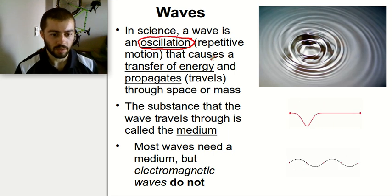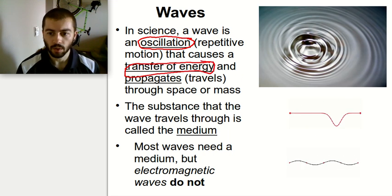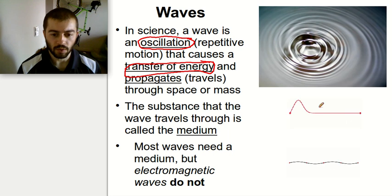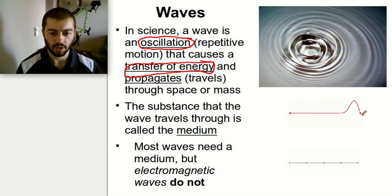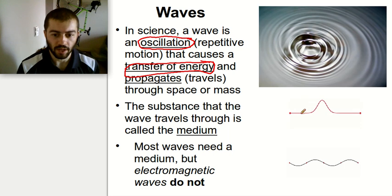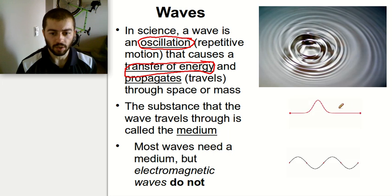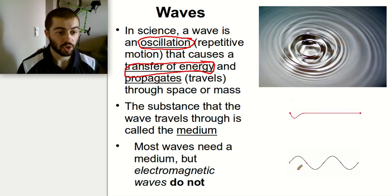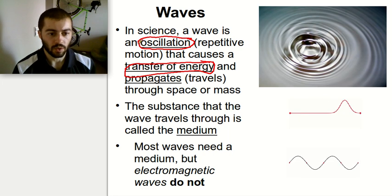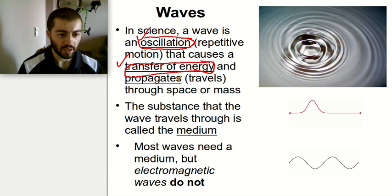The next aspect is that it involves a transfer of energy. This wave here is transferring energy — that's essentially what a wave does. There's energy of motion here, and it's transferring as we go along. So it's an oscillation, it involves a transfer of energy, and it propagates. The word propagate means just to travel through whatever space or mass it's moving through.